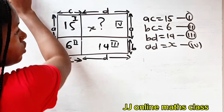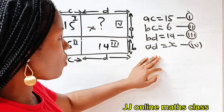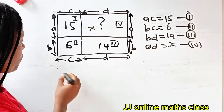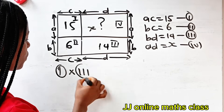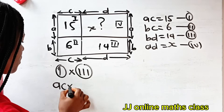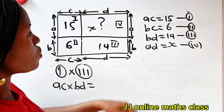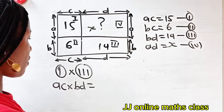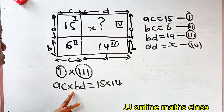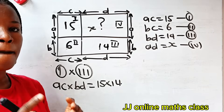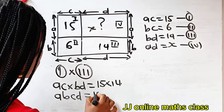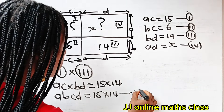If we multiply equation 1 by equation 3, we get AC multiplied by BD, which equals 15 multiplied by 14. AC times BD is the same as A·B·C·D. So A·B·C·D equals 15 times 14. Let's call this equation 5.